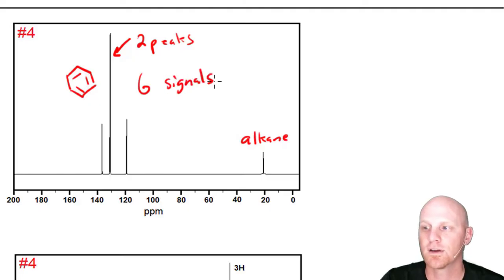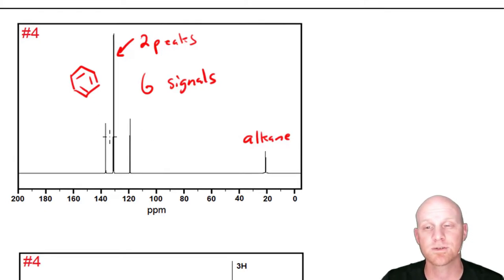In the H-NMR, 4 signals in the aromatic region tells me we've got some symmetry in our benzene. Benzene's got 6 carbons, so if it only has 4 signals, there's some symmetry there.